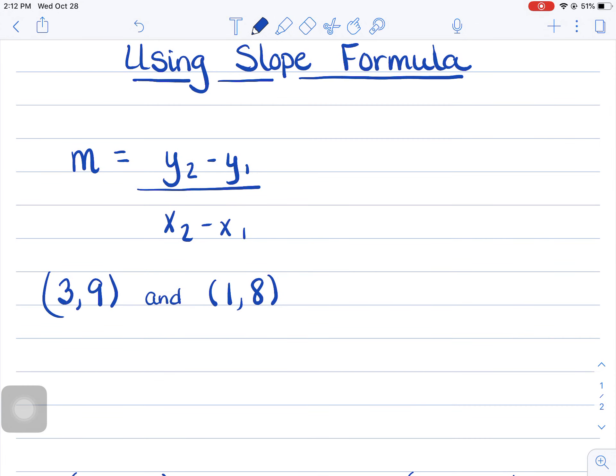We're going to talk about how to use the slope formula when you're given two points. We know already that the slope is identified with the variable m. The slope formula is y2 minus y1 over x2 minus x1, which is really just the differences of the y's divided by the differences of the x's.